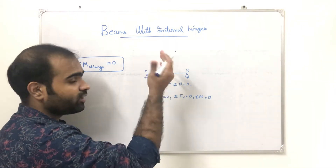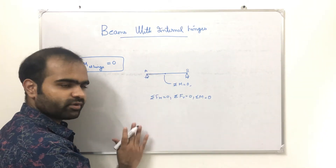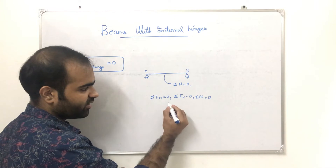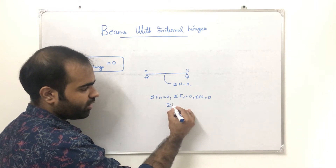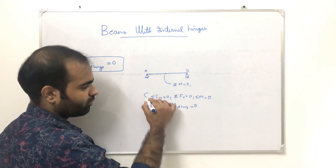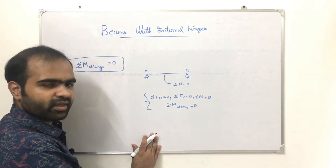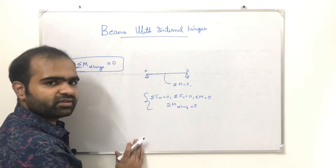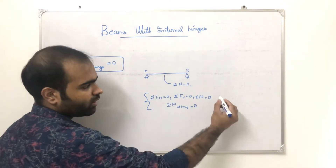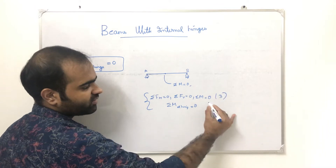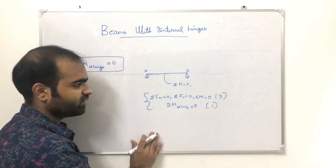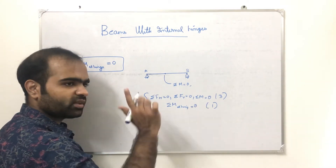If we are using the other position, it will determine that sigma M at the hinge equals 0. Then we have three equations of equilibrium plus one condition. The total equations of equilibrium in this case: 3 plus 1 is equal to 4.